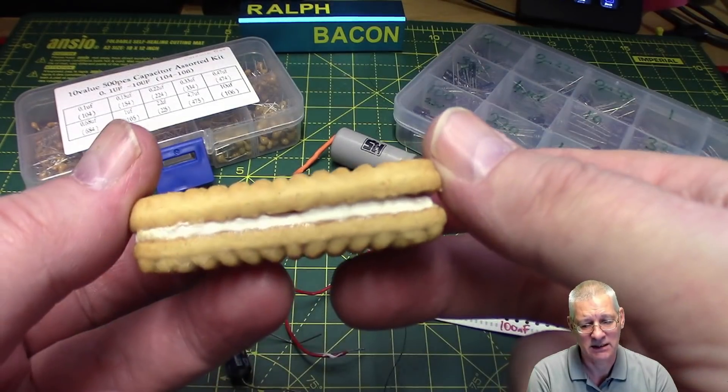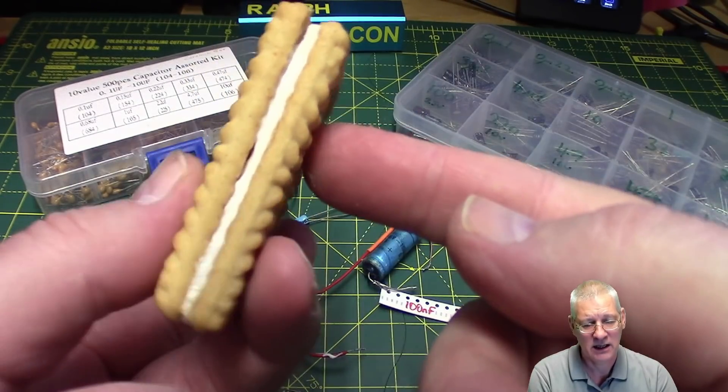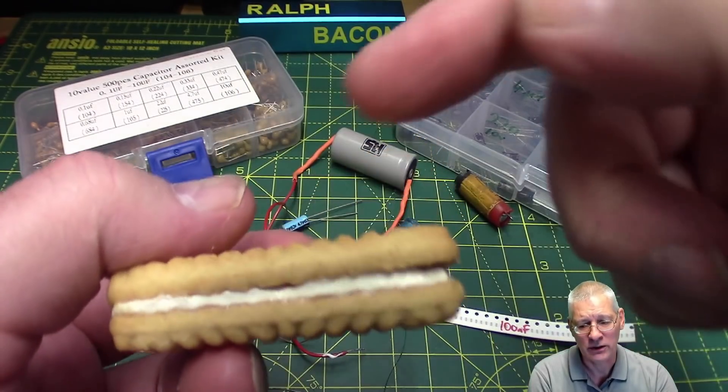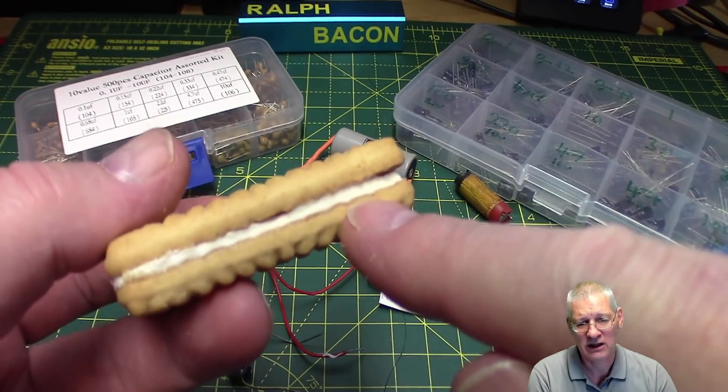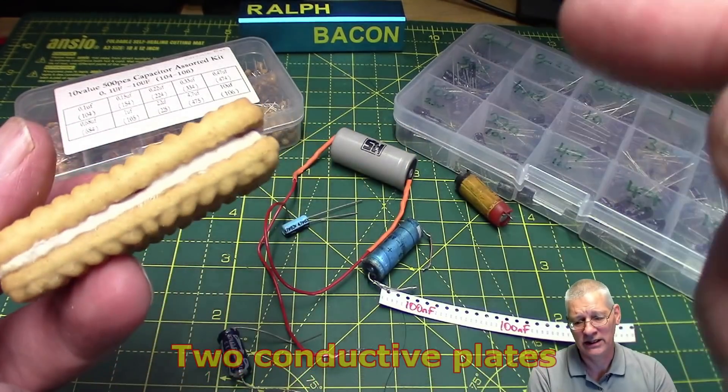Whatever the shape or size, they all basically come down to something like this, where you've got a conductive plate one side, normally foil, another one the other side. But there's something in the middle. That's called a dielectric. You don't really need to know about that.